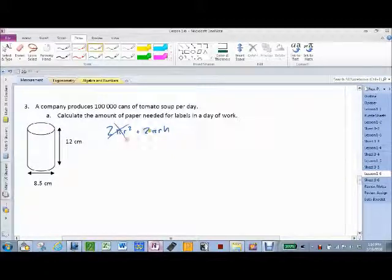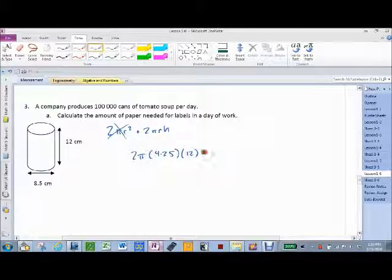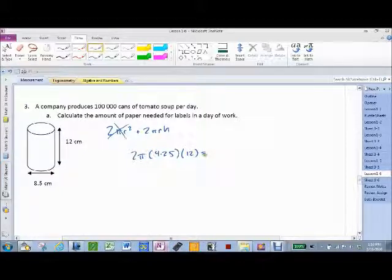So these are gone. So I only care about 2 pi r h. So 2 pi, what's r? 4.25. And what's h? 12. So I do that on my calculator, and I get 102 pi, correct?